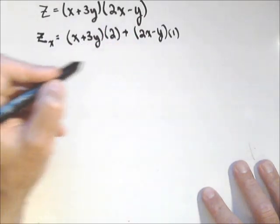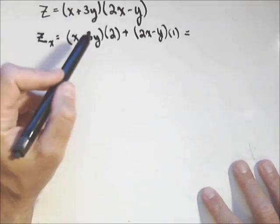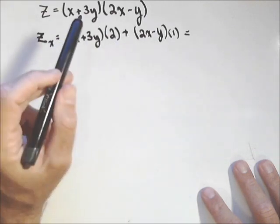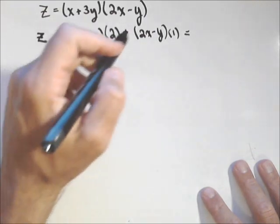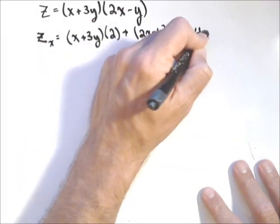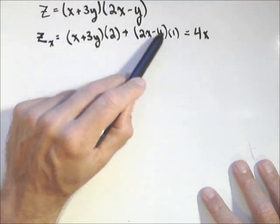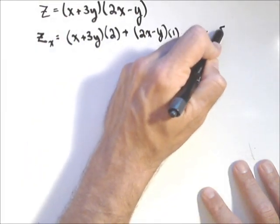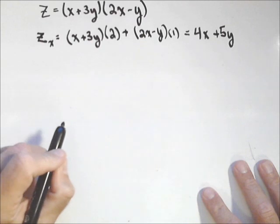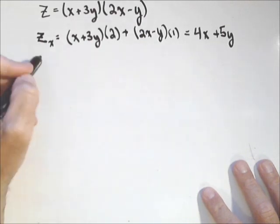We can do a little bit of simplifying here. We have 2x plus another 2x, so we'll have 4x, because we're just going to be distributing a 1 through there. We have 6y minus y, so plus 5y. That'll be useful when we do our second-order partials.